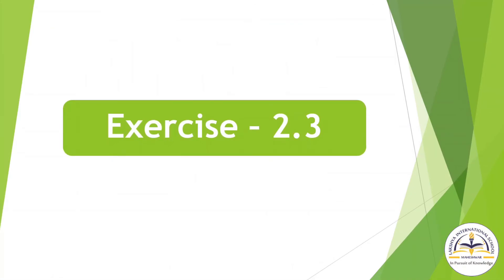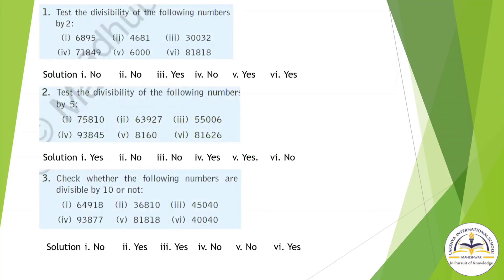Now let's start Exercise 2.3. Test the divisibility of the following numbers by 2. For question number 1, the number ends in 5 — 5 is at the last position and it is not divisible by 2, so no. For question number 5, the number is 6000, and since 0 is at the last position, 0 is divisible by 2, so yes. Question number 2: test the divisibility of the following numbers by 5 — check whether 0 or 5 is at the last position.